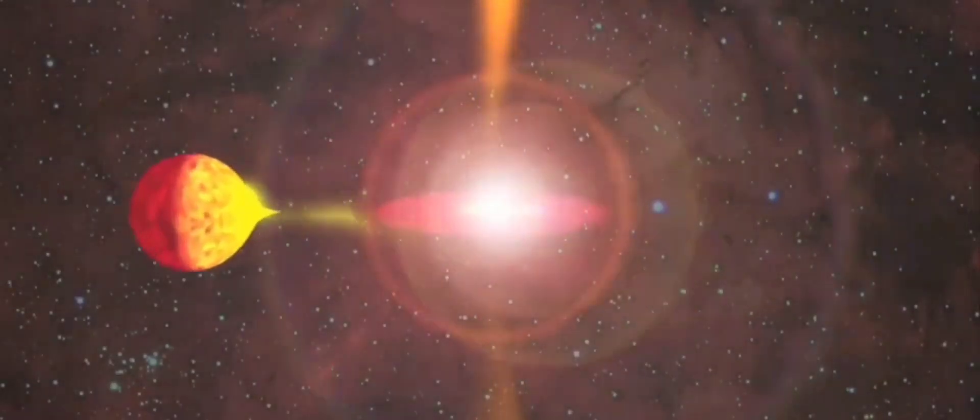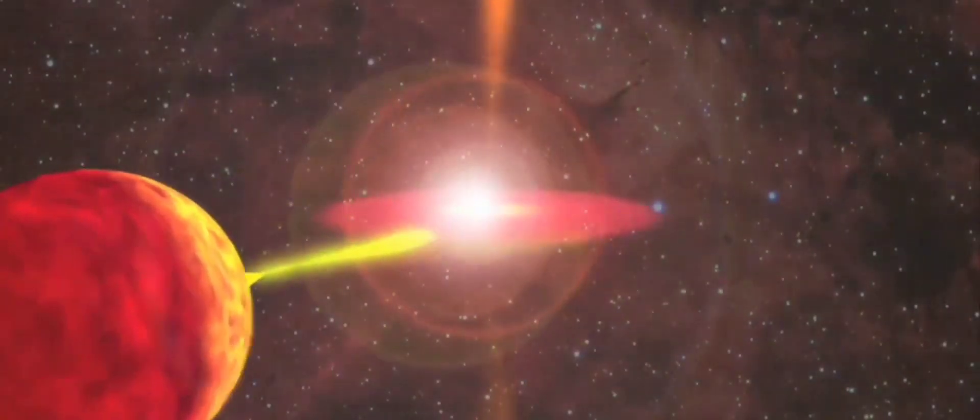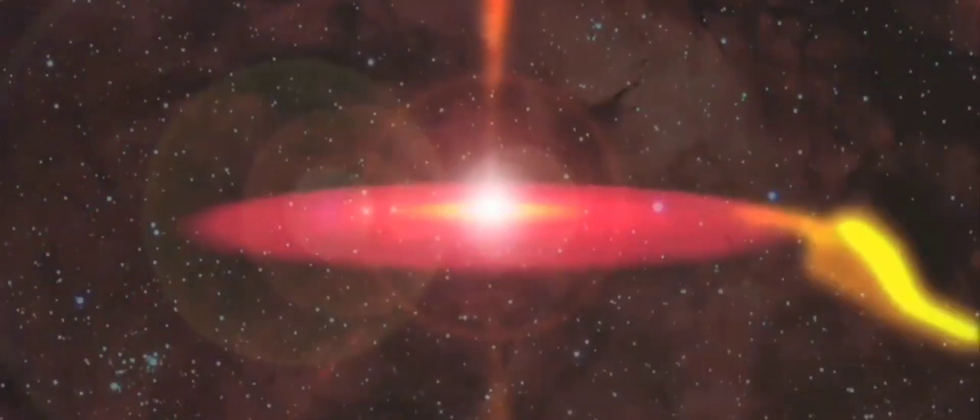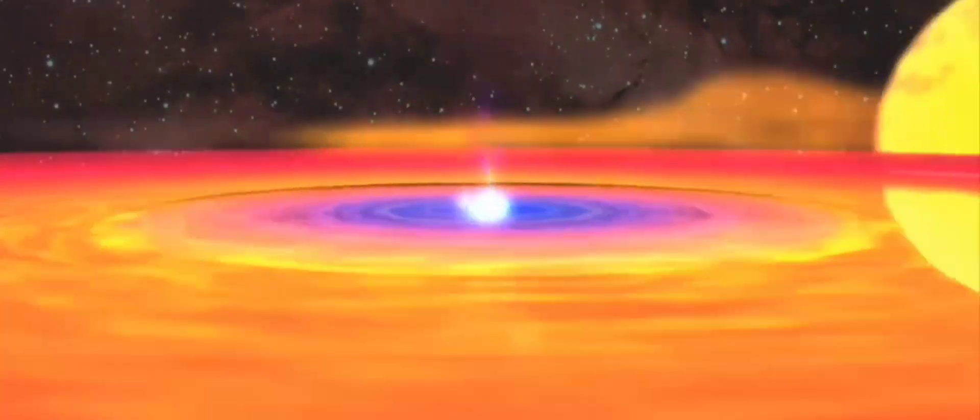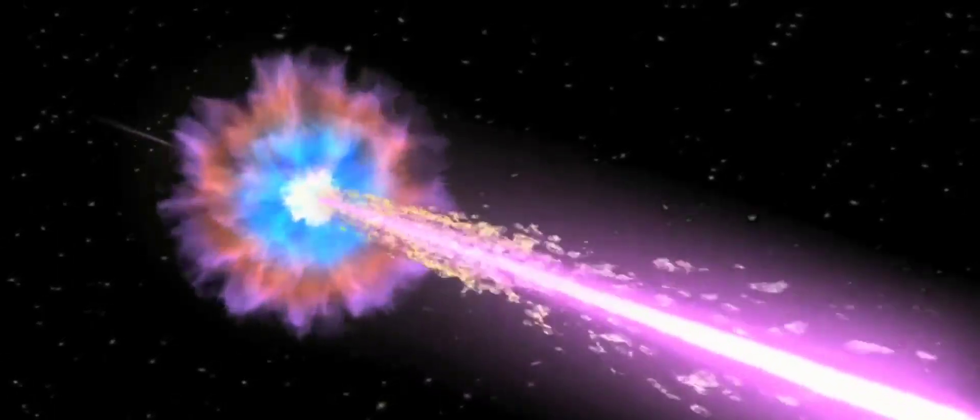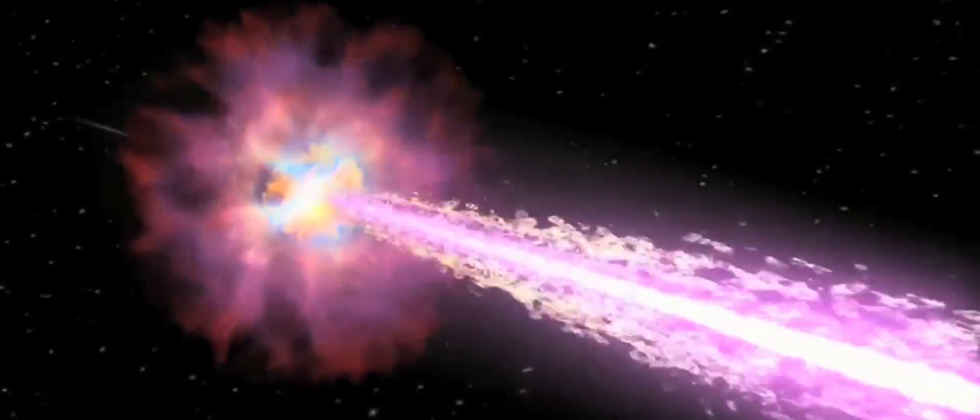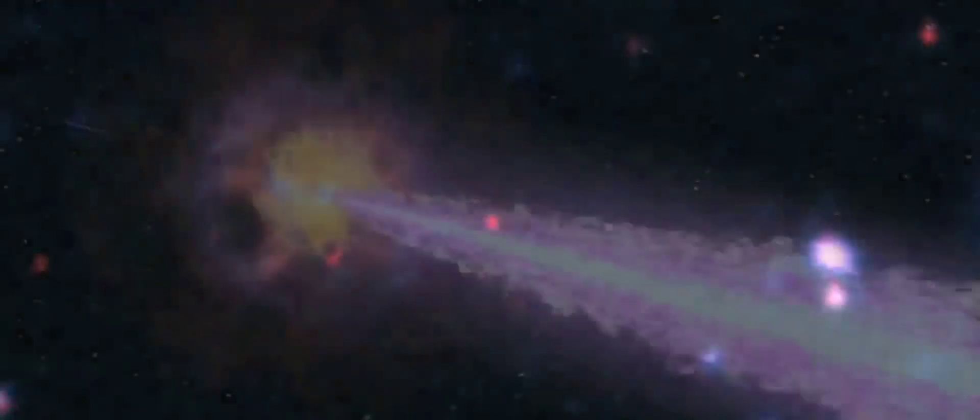Every black hole has an event horizon. This is a point at which the gravitational pull from its center becomes so great as to make escape impossible. Light emitted from within the event horizon can never reach the observer, and things that fall in can never escape. The more massive the black hole, the larger the event horizon.